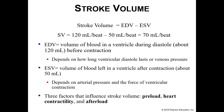Now keep in mind what's actually causing these volumes. Your end diastolic volume is approximately 120 milliliters — that is the volume of blood in a ventricle during diastole, so relaxation, before the ventricle contracts. This volume can change depending on how long we are relaxing or your venous pressure.